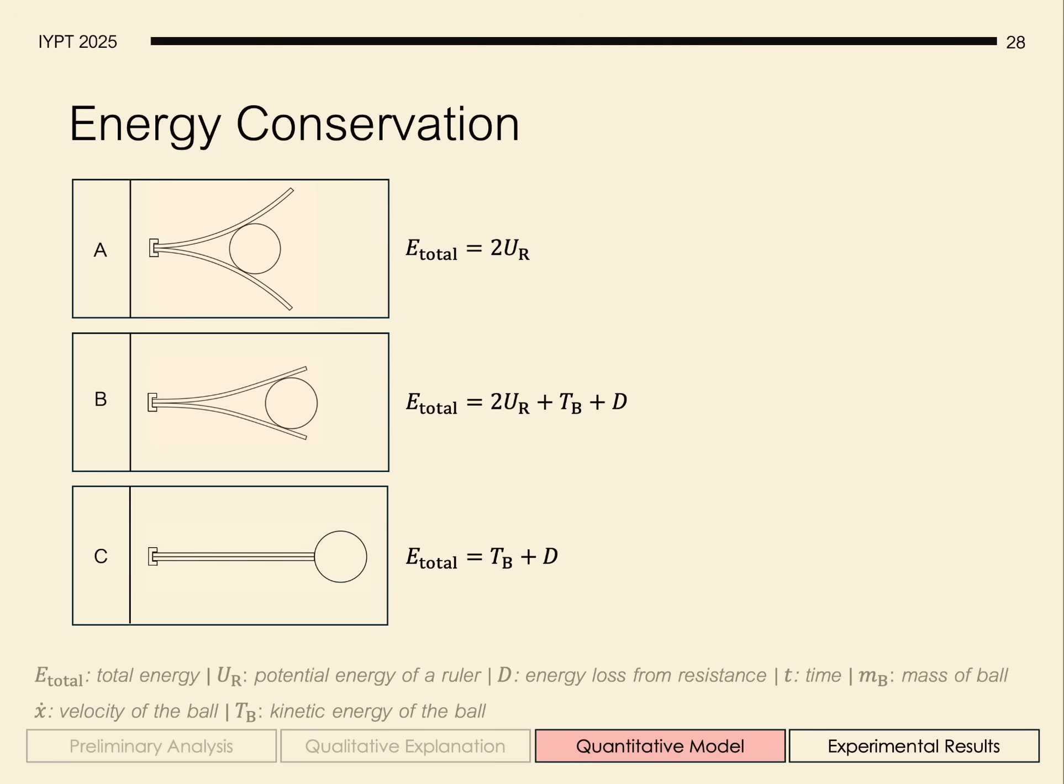And finally, as the ball just exits the rulers and the rulers close, the elastic potential energy is entirely converted into both the kinetic energy of the ball, and the energy dissipated into the environment.